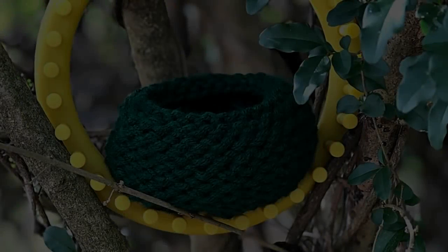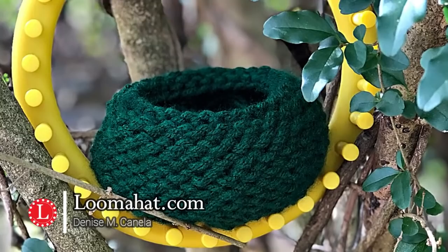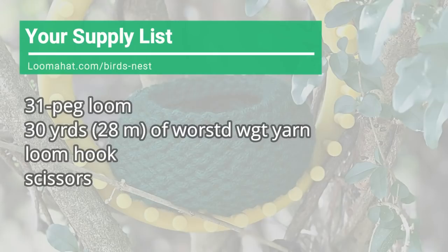Hey there, it's Denise from WilmaHead.com and this time I'm gonna teach you how to knit a bird's nest. You're gonna need a 31 peg loom, 30 yards of worsted weight yarn, a hook and scissors. Alright, let's begin.